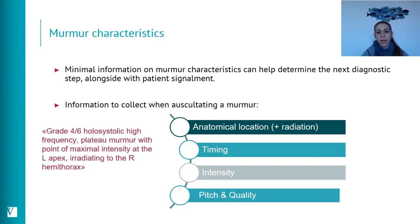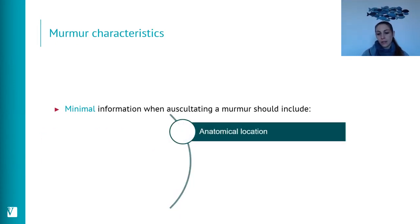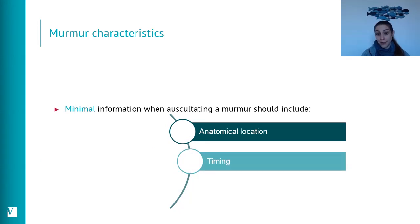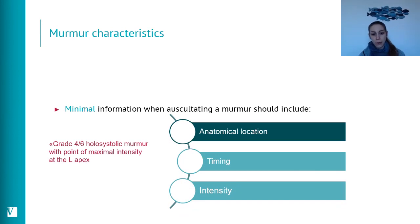A full murmur description should read something like: 'a grade 4/6, holosystolic, high-frequency, plateau murmur with point of maximal intensity at the left apex, irradiating to the right hemithorax.' The minimal dataset we need is anatomical location, timing, and intensity. For example: 'a left apical grade 4/6 holosystolic murmur.' This is achievable in 95% of patients.